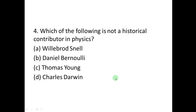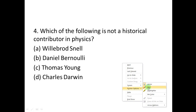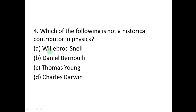Question number four: Which one of the following is NOT a historical contributor in physics? A: Willie Borne Snell, B: Daniel Brownlee, C: Thomasian, D: Charles Darwin. The answer is Charles Darwin, who proposed the theory of evolution and natural selection — concepts belonging to biology, not physics.